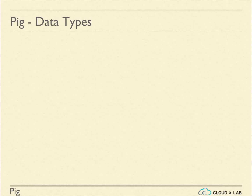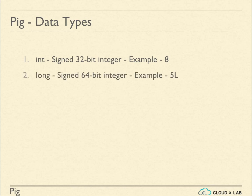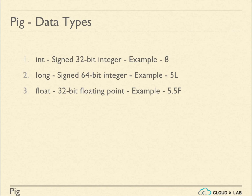Let us go through data types in PIG. Int represents a signed 32-bit integer. Long represents a signed 64-bit integer. Float represents a signed 32-bit floating point. Double is a 64-bit floating point.